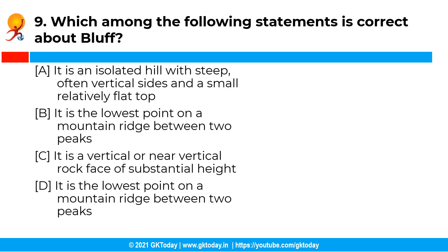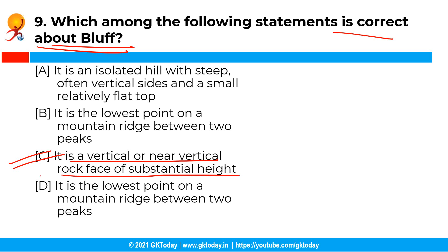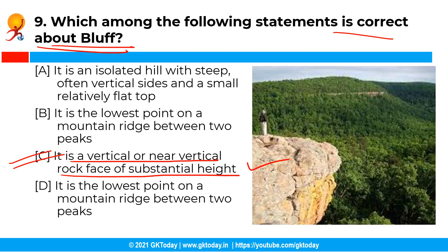The next question is: Which among the following statements is correct about bluff? The correct answer is option C, that is: it is a vertical or near-vertical rock face of substantial height. Basically, a bluff is also called a cliff and is a vertical or near-vertical rock face of substantial height. They are common on the coast and in mountainous regions.